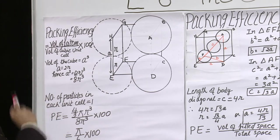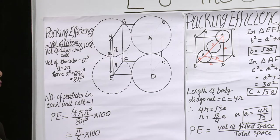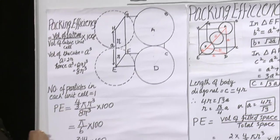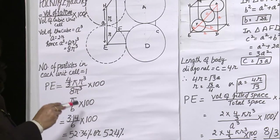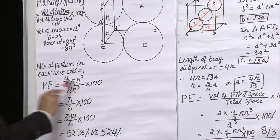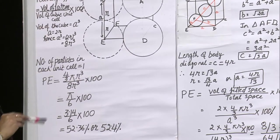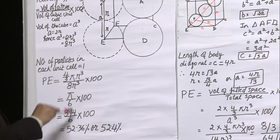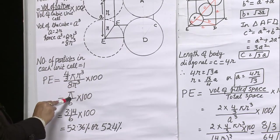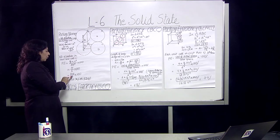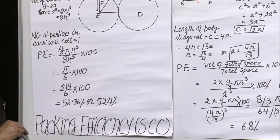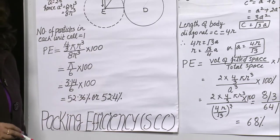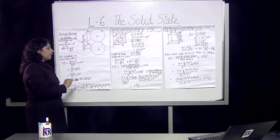Since two radii span side A, we have A = 2R, hence A³ = (2R)³ = 8R³. The formula for packing efficiency is: volume of one atom divided by volume of the cubic unit cell, multiplied by 100%. Volume of one atom = (4/3)πR³, and volume of the unit cell = A³ = 8R³. Substituting and using π = 3.14, we get 52.36%, approximately 52.4%. So 52.4% is the packing efficiency of the simple cubic cell.